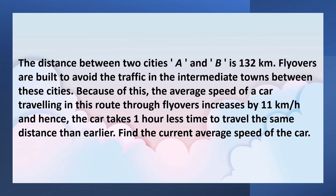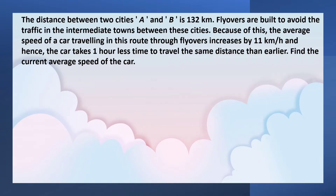The distance between two cities A and B is 132 km. Flyovers are built to avoid the traffic in the intermediate towns between these cities. Because of this, the average speed of a car traveling this route through flyovers increases by 11 km per hour, and hence the car takes one hour less to travel the same distance than earlier. Find the current average speed of the car.